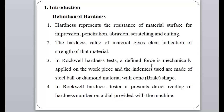The indenters used in the Rockwell hardness test are made of a steel ball or a diamond-tipped cone (Brale indenter). Two types of indenters may be used: a steel ball indenter and a cone indenter whose tip is coated with diamond material. The machine presents a direct reading of the hardness number on the dial scale.